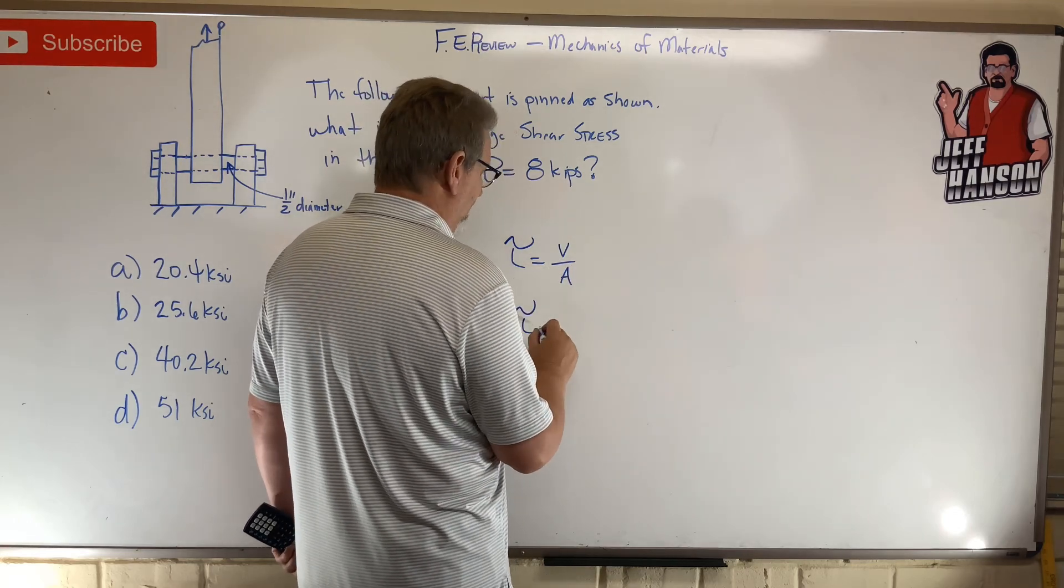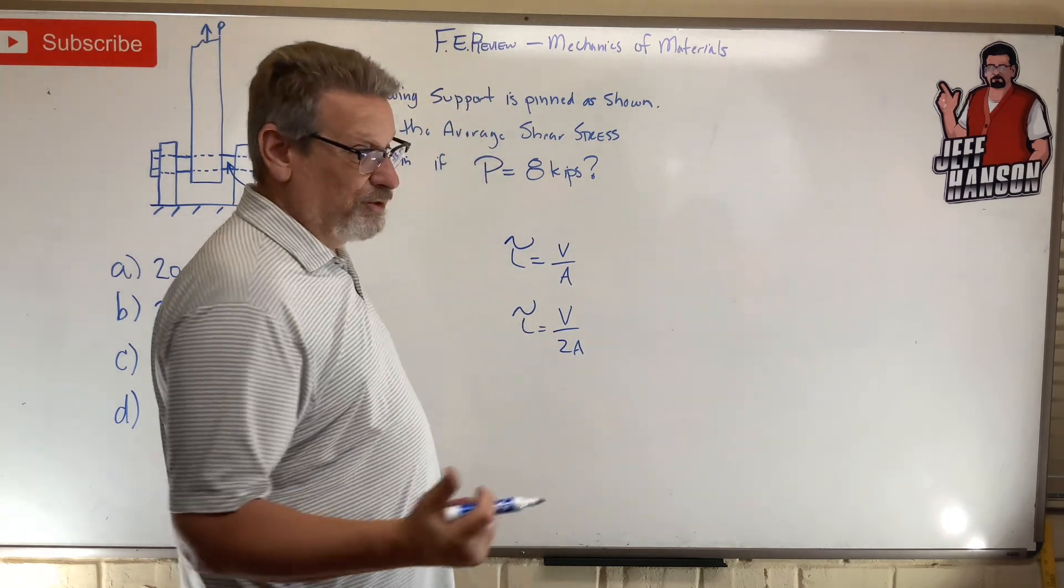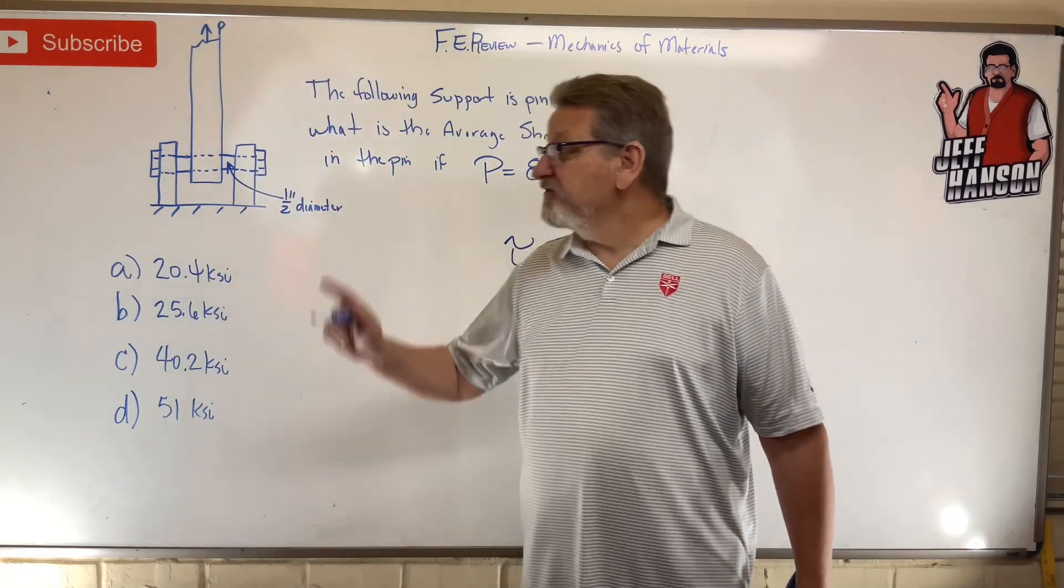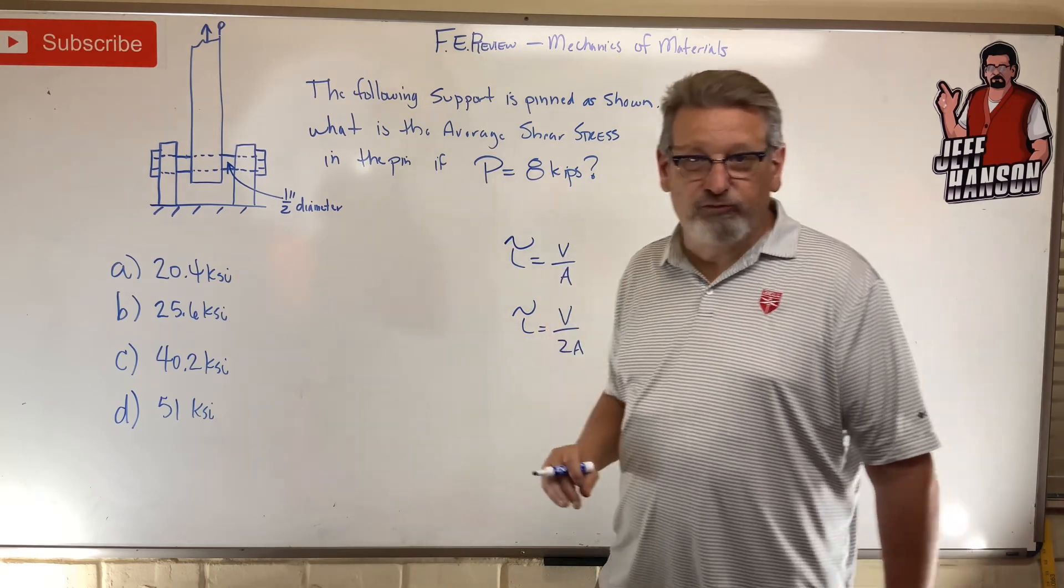Now here we go. We're looking for tau. Well, that's V over A, unless it's double shear and it's V over 2A. So is this single shear or double shear? If I start yanking on that, how many times do I have to tear the bolt to get the whole thing to rip apart?